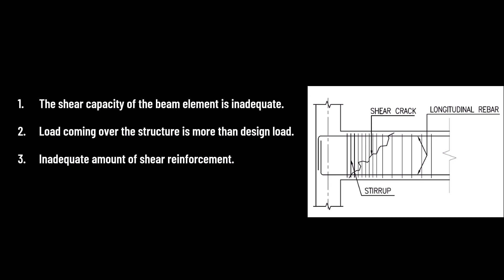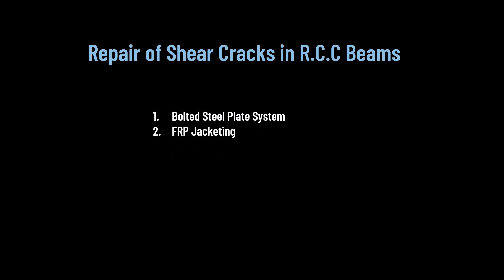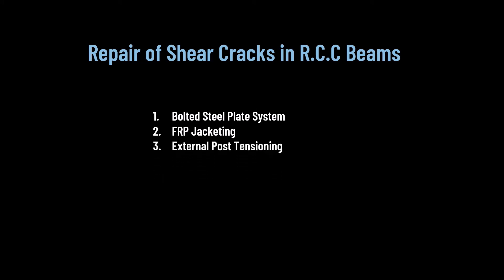There are several methods adopted to repair shear or diagonal cracks in RCC beams, among which the bolted steel plate system, FRP jacketing, and external post-tensioning are the most common methods used.